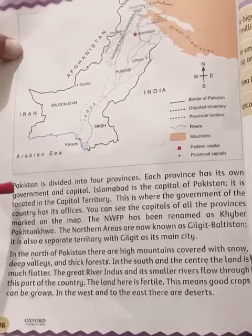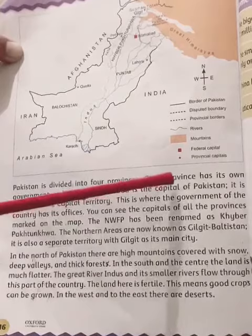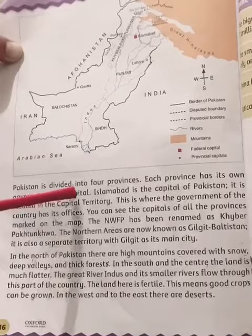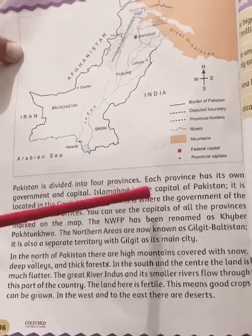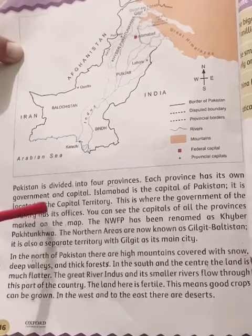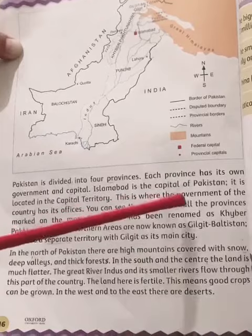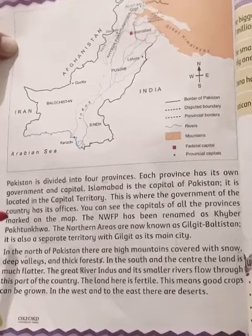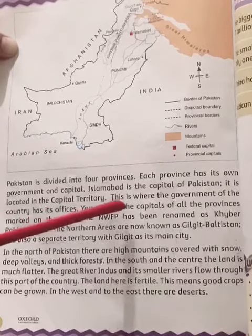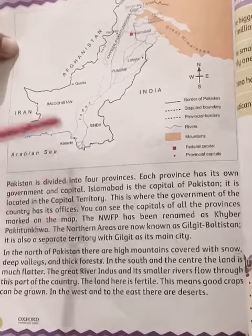Book page number 16. Pakistan is divided into 4 provinces. Each province has its own government and capital. Islamabad is the capital of Pakistan. It is located in the capital territory. This is where the government of the country has its offices. You can see the capitals of all the provinces marked on the map here.